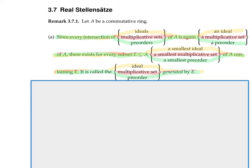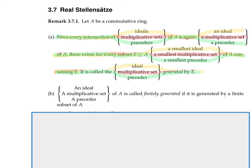An ideal of A is called finitely generated if it is generated by a finite subset of A. You can take an infinite subset and look at the ideal generated by it; it could still be finitely generated if there exists another finite subset generating the same ideal. Similarly, a multiplicative set of A is called finitely generated if it is generated by a finite subset, and a preorder is called finitely generated if it is generated by a finite subset.